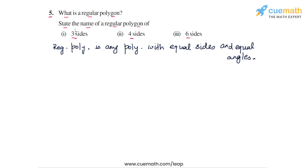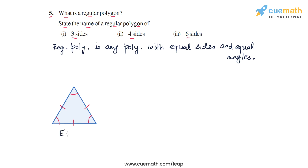Now we are asked to state the name of a regular polygon of 3 sides, 4 sides, and 6 sides. A regular polygon of 3 sides will actually be a triangle in which all the sides are equal and all the angles are also equal — and because they are equal, each angle will be 60 degrees. So such a polygon is actually an equilateral triangle. A regular polygon of 3 sides is an equilateral triangle.